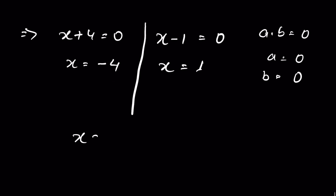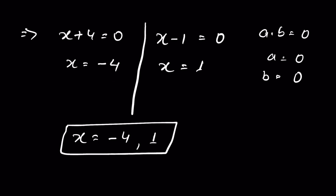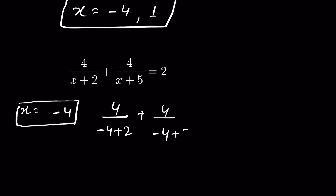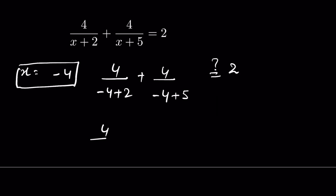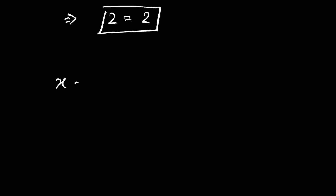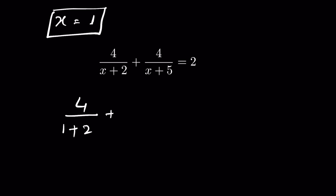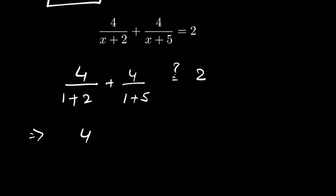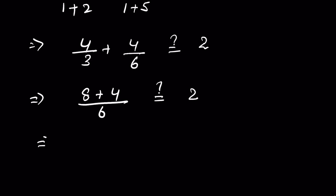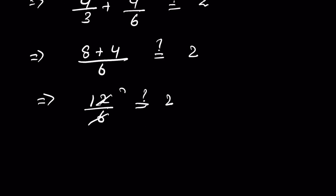The two solutions are x = −4 and x = 1. Let's verify: when x = −4, we get 4/(−4+2) + 4/(−4+5) = 4/(−2) + 4/1 = −2+4 = 2. LHS equals RHS. When x = 1, we get 4/(1+2) + 4/(1+5) = 4/3 + 4/6. The LCD is 6, giving 8/6 + 4/6 = 12/6 = 2. LHS equals RHS.